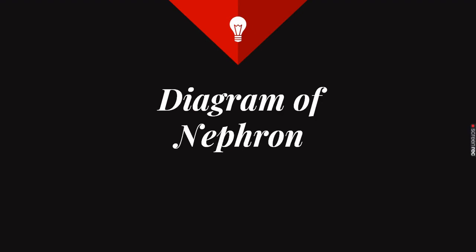Nephron is the structural and functional unit of the kidney. It filters the blood and separates the toxic substance urea from it. We will learn to draw the diagram of nephron in this video.